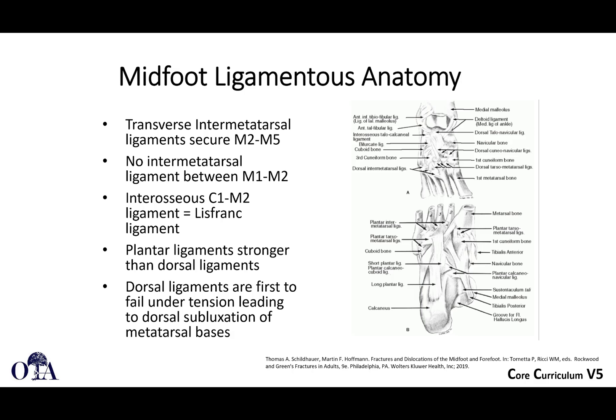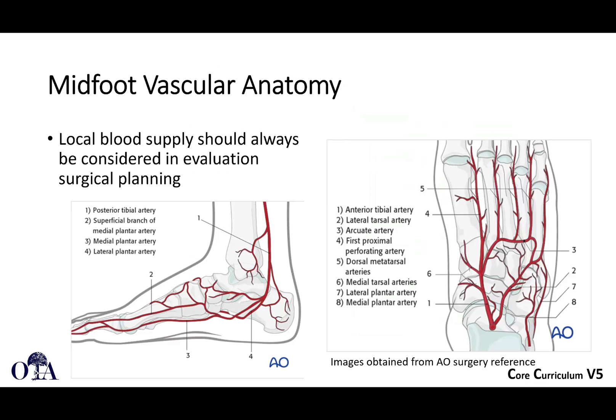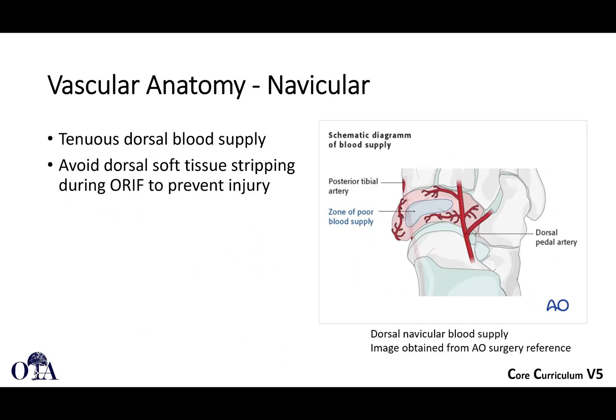The anatomy includes a lot of ligament structures. There are interosseous ligaments such as the Lisfranc ligament, and there's the ligament of Sapi, which is your plantar oblique ligament. The dorsalis pedis is found just lateral to the EHB tendon at the level of the tarsal-metatarsal joint, so be aware of that when doing your dissection. Regarding vascular anatomy, the local blood supply should always be considered during surgical planning. This includes the posterior tibial artery and its branches and the anterior tibial artery and its branches distally. The navicular has a tenuous dorsal blood supply, so be careful dissecting dorsally to prevent devascularization.